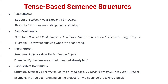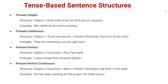Now let's understand present simple. The structure of present simple is: subject + base verb (first form of the verb). We add 's' or 'es' with third person singular — that is he, she, it, or a name. For example: 'She reads books every evening.'